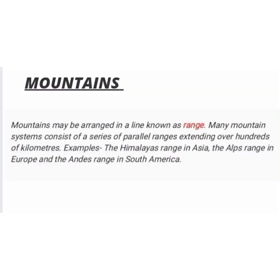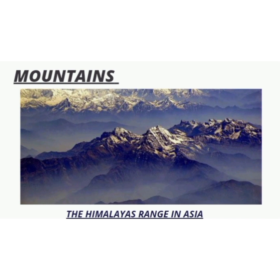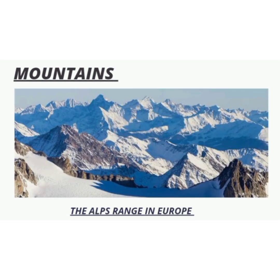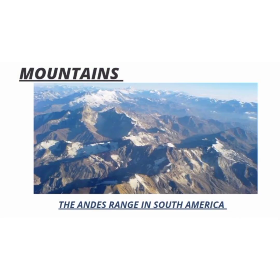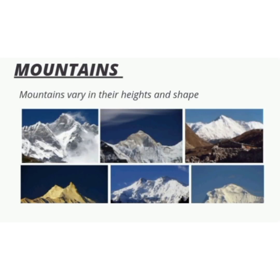Mountains may be arranged in a line known as a range. Many mountain systems consist of a series of parallel ranges that extend over hundreds of kilometers. Examples are the Himalayan range in Asia, the Alps range in Europe, and the Andes range in South America. Mountains also vary in their heights and shapes.